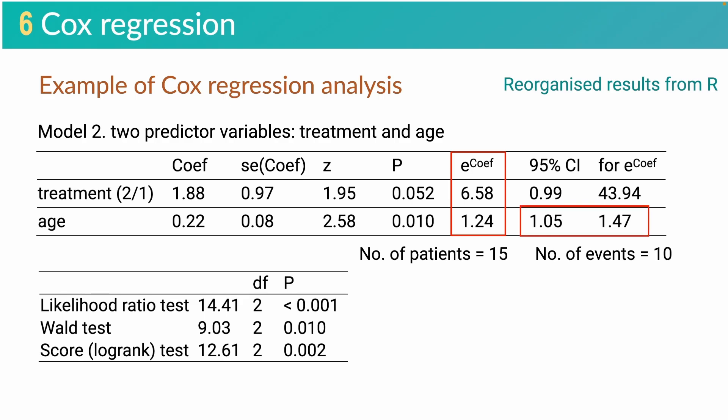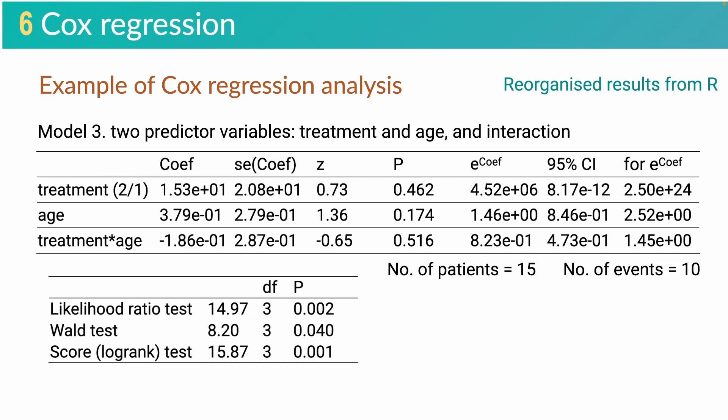In this case, the confidence interval contains 1, indicating the statistical significance of age. This is the last model, model 3. This model includes an interaction term between treatment and age. The global test shows that the model is significant. However, no significance was observed for treatment, age, or the interaction term. Because there is no significant interaction between treatment and age, we should not include the interaction in the model. That means we should use model 2 for prediction, which we have already discussed previously.